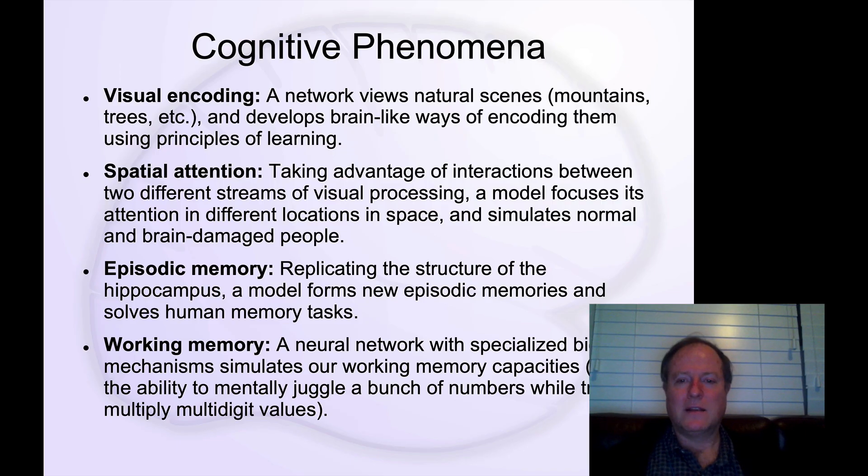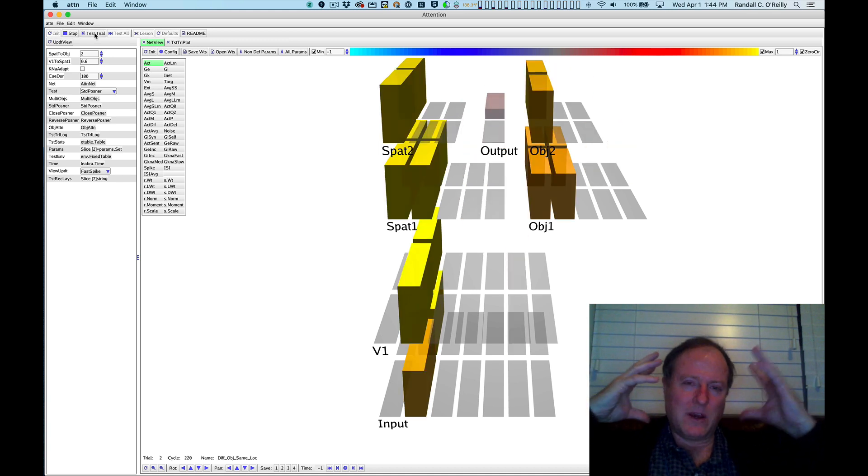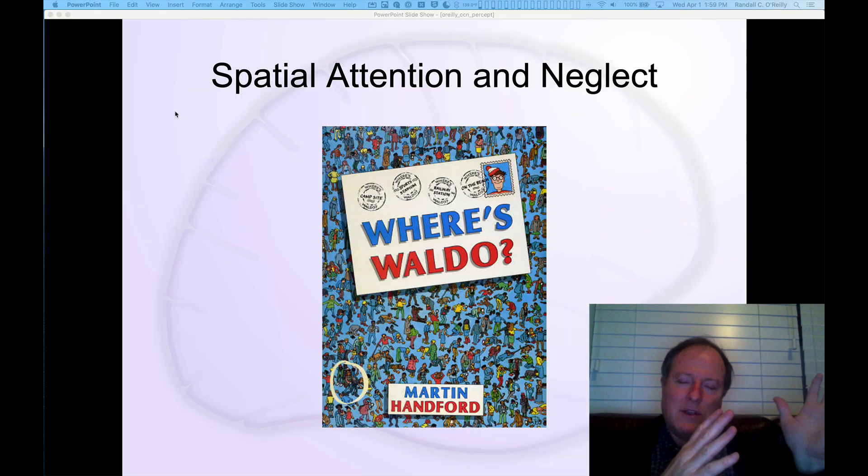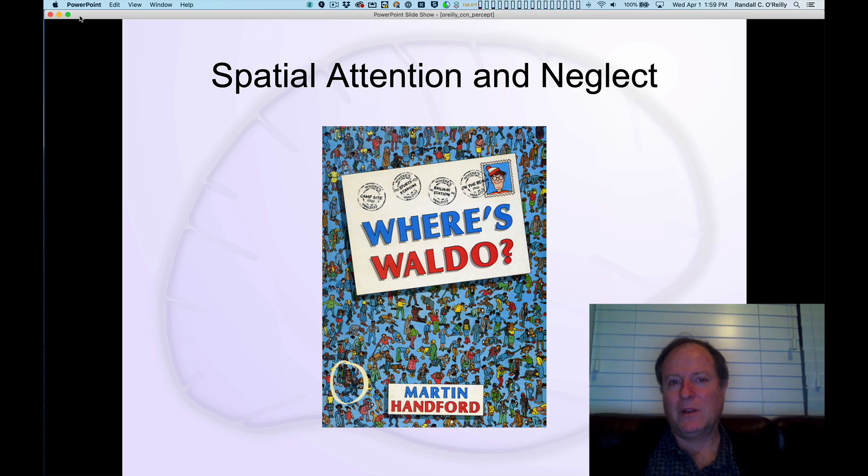Next we'll look at spatial attention, which is capturing these bidirectional connections among neurons and showing how higher levels of the brain, lower levels of the brain, different pathways in the brain can all work together to focus our attention in one part of the visual field or another and coordinate neural processing on different aspects of the overall scene or world that we might be looking at.